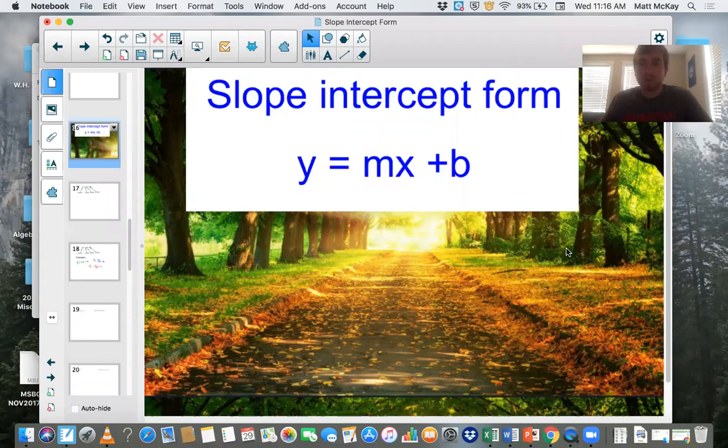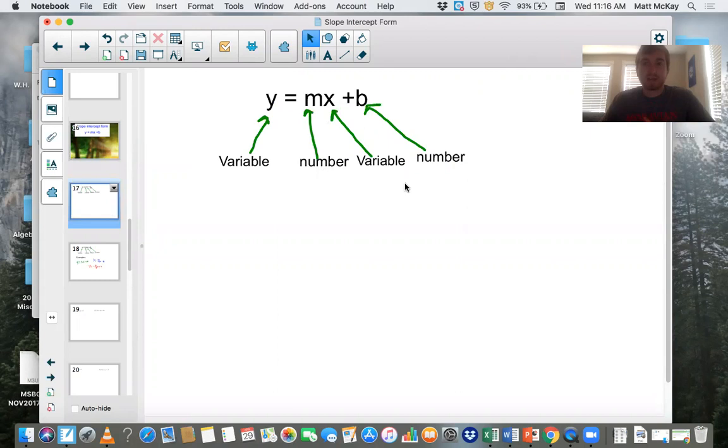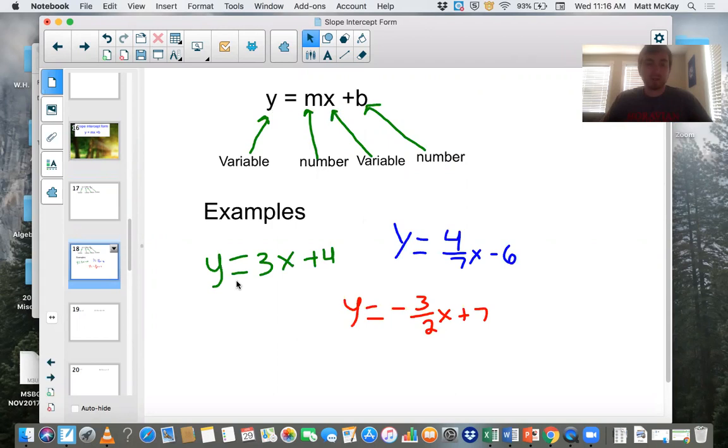Hey, so I want to make a quick video here on slope intercept form with a few more practice problems so that you can look through it and see how to put it in that form. So here's slope intercept form. It's y equals mx plus b.